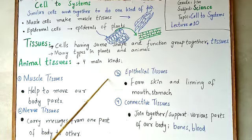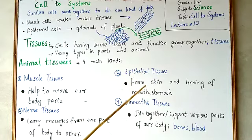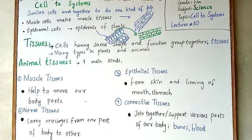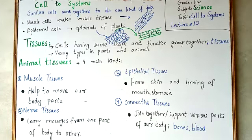The third kind of tissues are epithelial tissues. As the name indicates, they form the lining and skin of our body. They form the lining of the mouth and stomach — the stomach has an inner lining formed by these cells. They also form skin cells, like the skin of your hand and body.